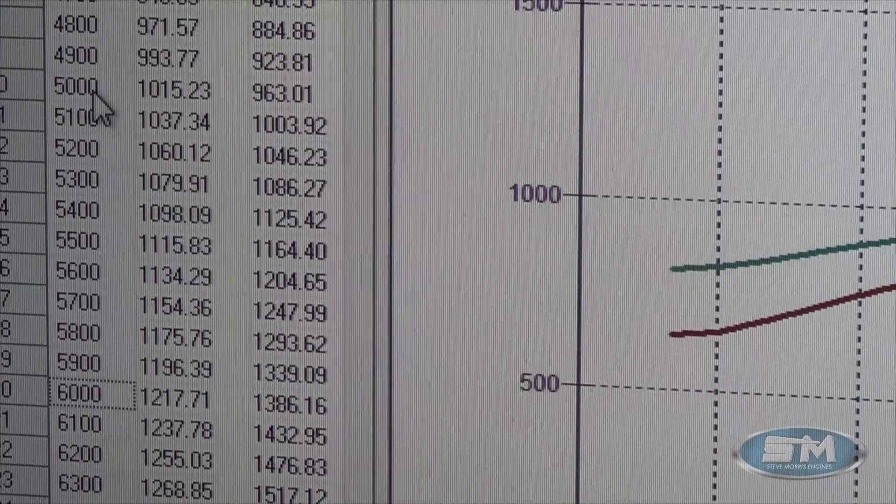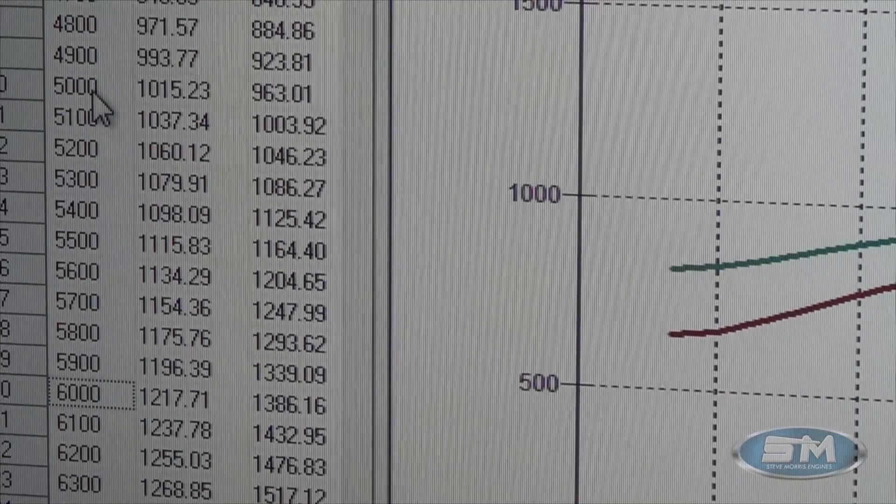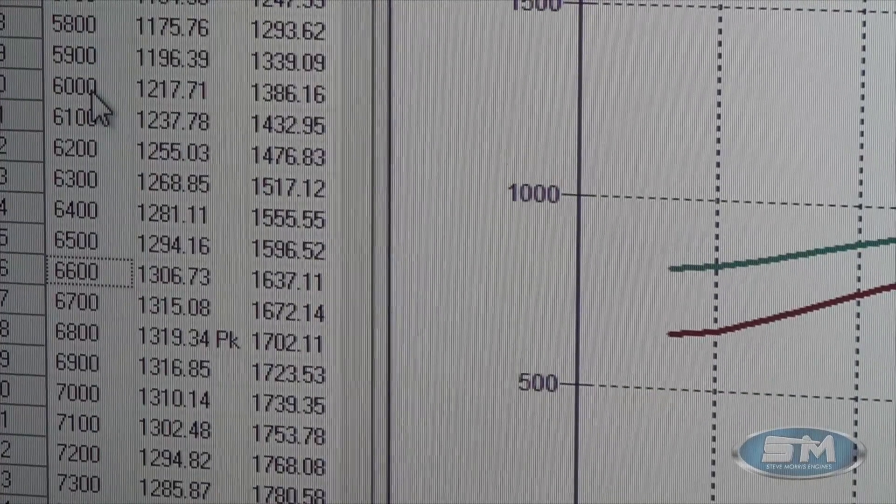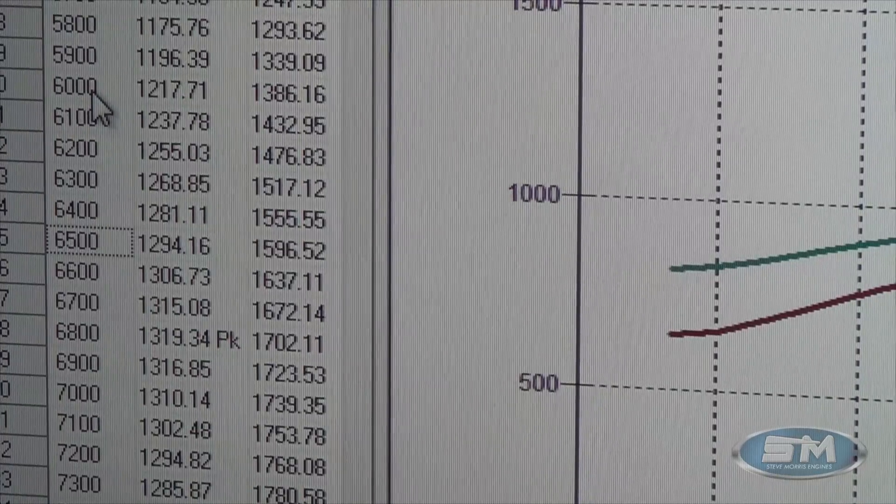By 6,000 it's 1,217 and 1,386. At 6,500 we are 1,294 and 1,596.